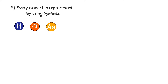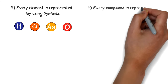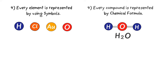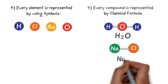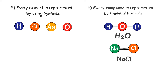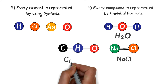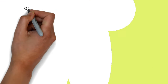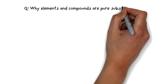Fourthly, every element is represented using symbols. For example, hydrogen is represented by H, chlorine by Cl, gold by Au, and oxygen by O. While every compound is represented by a chemical formula — for example, the chemical formula of water is H₂O, the chemical formula of table salt is NaCl, and the chemical formula of sugar is C₆H₁₂O₆.